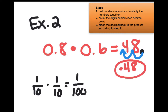Do you see how we found the product using mental math? We just pretended the decimals weren't there and it was just two whole numbers, 8 times 6, and we multiplied them — we got 48. And we said, well we're really taking a tenth times a tenth, so I should have a digit in the hundredths place since a tenth times a tenth is one hundredth. So then we move the decimal point back in.